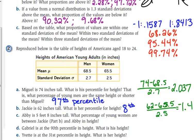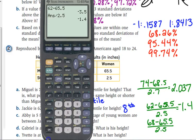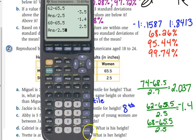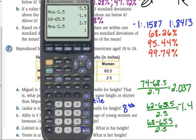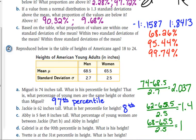Abby is 5'8". What percentage of young women are between Jackie in Part B and Abby in height? So just adding another little twist to this. So first of all, we've got to convert feet to inches. 5'8 is 68. And I'm 68. So let's find her standardized value. 68 minus 65.5 over 2.5. She is exactly 1 standard deviation above.